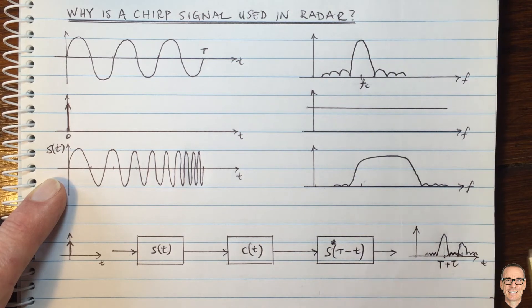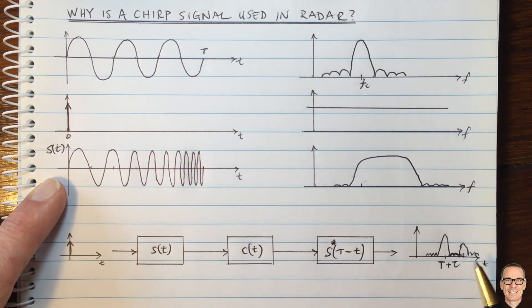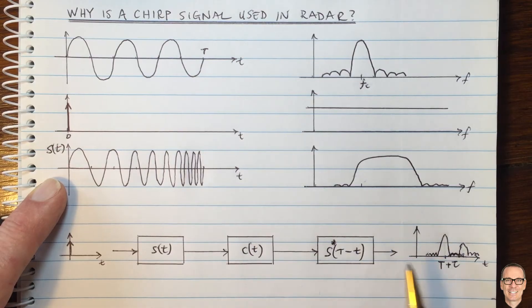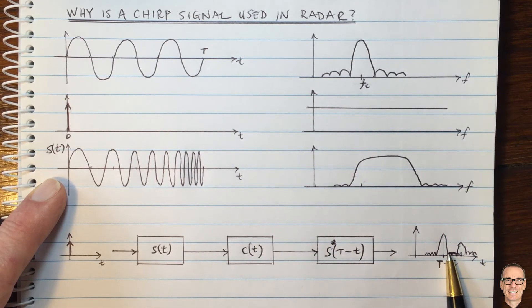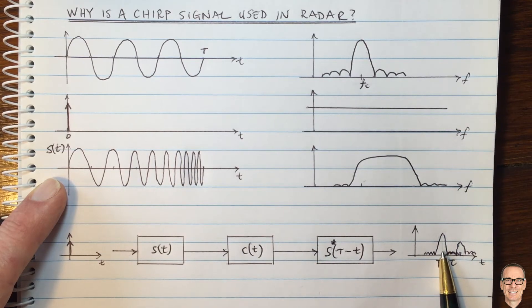And this is sometimes called pulse compression. This CHIRP approach is called pulse compression. And you can see why here, because you're sending a pulse over a period of capital T, but by receiving it in this way with a matched filter, you are compressing, if it has this exact form, it results in a compression of that pulse into something that looks more like an impulse.